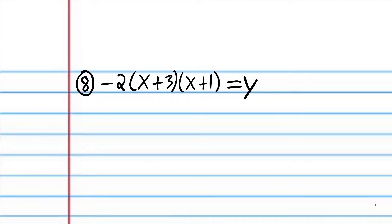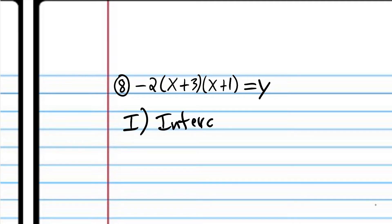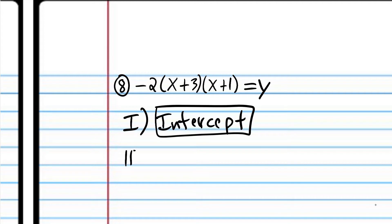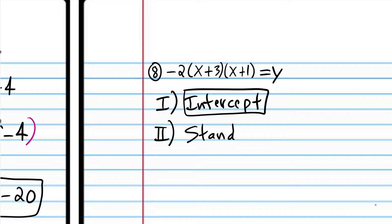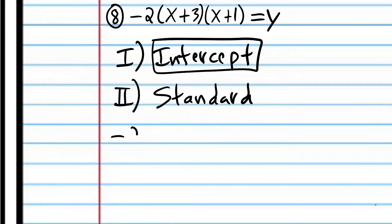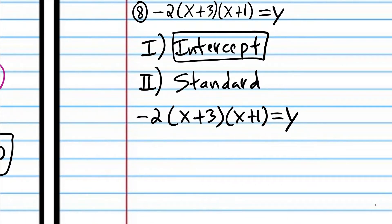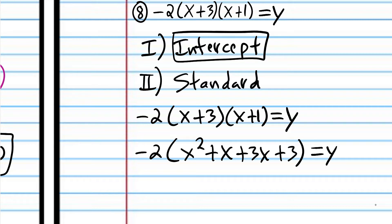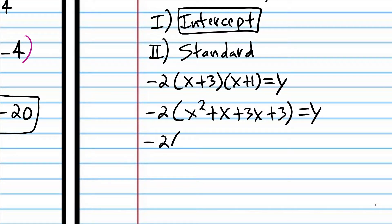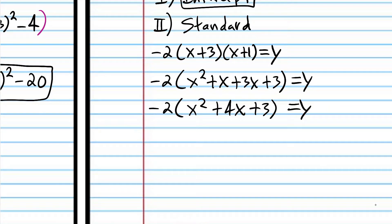I'm going to rewrite so you know exactly where we're starting from. Now we're going to use FOIL: x times x is x squared, x times 1 is x, 3 times x is 3x, and 3 times 1 is 3. Now we can combine the like terms: x plus 3x is 4x. Then we use the distribution property: negative 2 times x squared is negative 2x squared, negative 2 times 4x is negative 8x, and negative 2 times 3 is negative 6. And that is standard form.